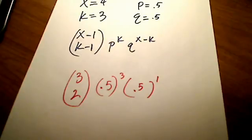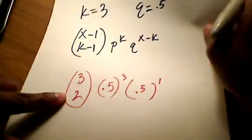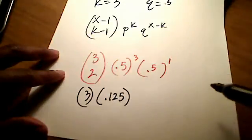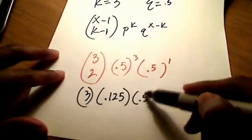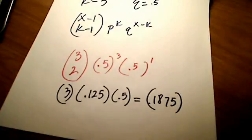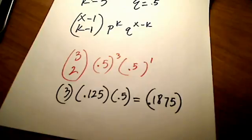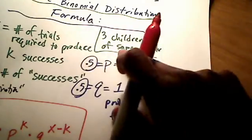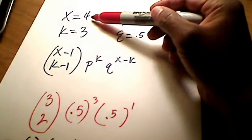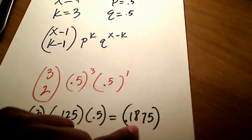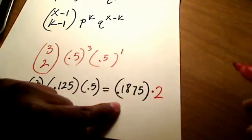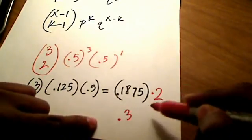Working out 3 choose 2 — that binomial coefficient — comes out to be 3. Then 0.5 raised to the 3rd power is 0.125, and 0.5 to the first power is just 0.5. Multiplying these three numbers together gives 0.1875. But don't stop there — this is the probability of getting three boys having had four children, and also the probability of having three girls in four children. Since I didn't specify which gender, I have to double it, giving a final answer of 0.375.